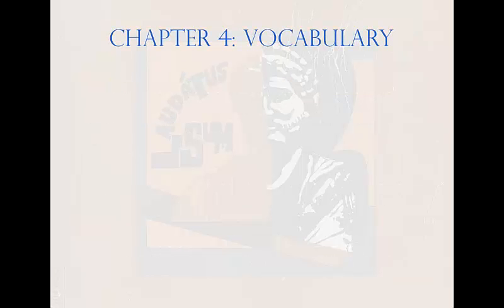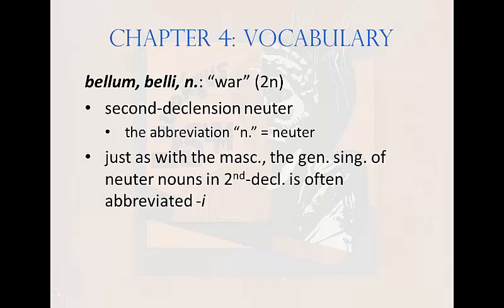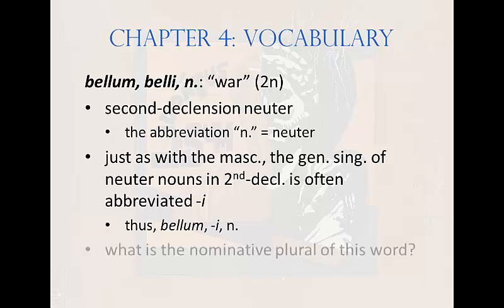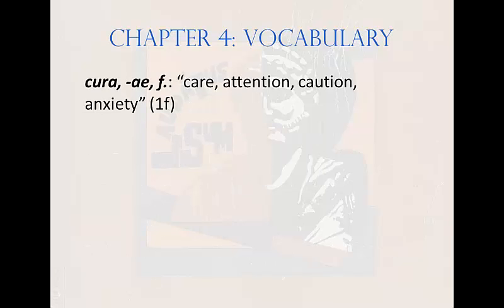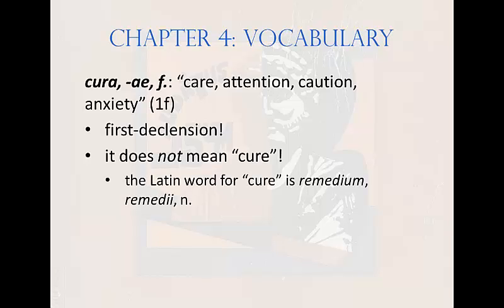Let's look at the vocabulary for chapter four. First: bellum, belli, neuter, meaning war — a second declension neuter noun. The genitive singular is often abbreviated with i, thus bellum i neuter. The nominative plural is bella. Next: cura, curae, feminine, meaning care, attention, caution, anxiety — a first declension feminine noun. Be careful: not all vocabulary in this list is second declension neuter. Also note that cura does not mean cure but care. The Latin word for cure is remedium, remedii, neuter, from which we get the word remedy.